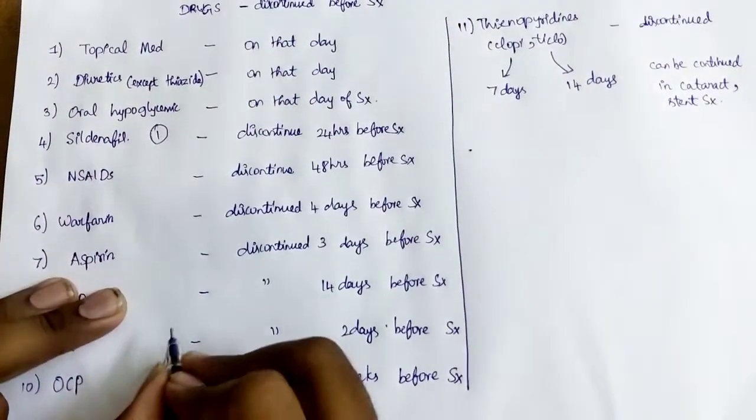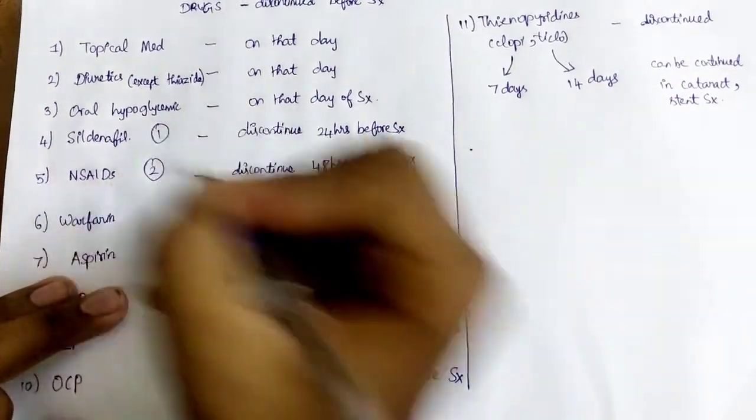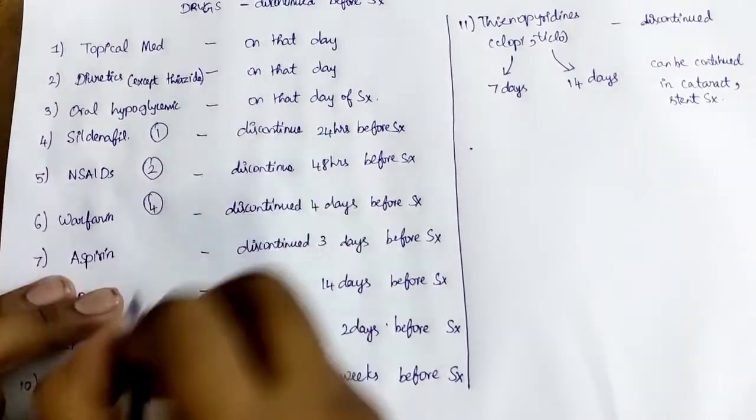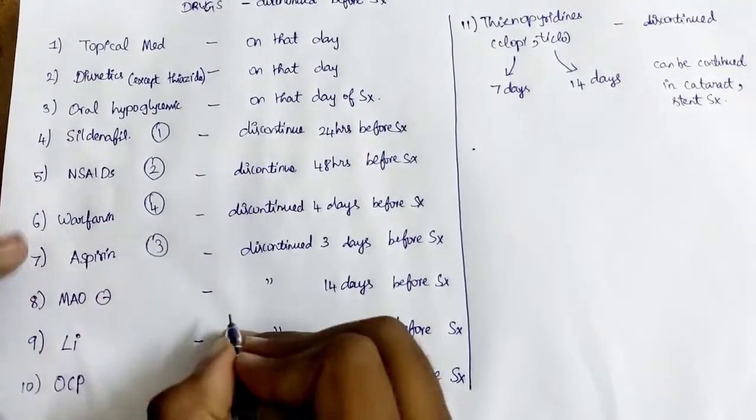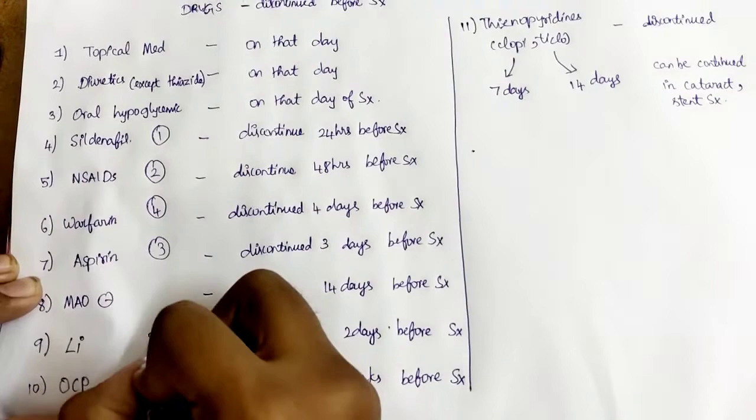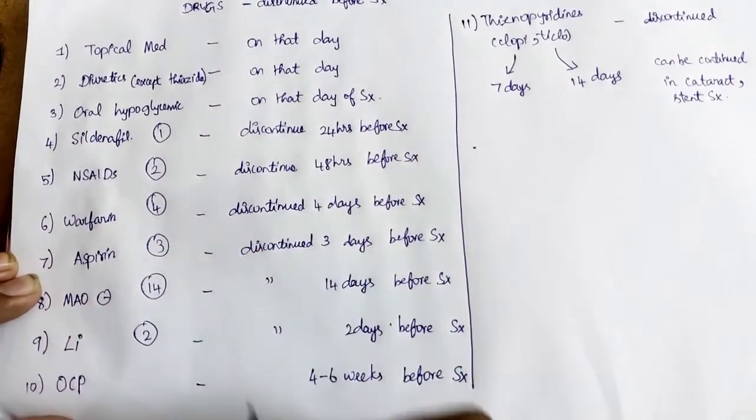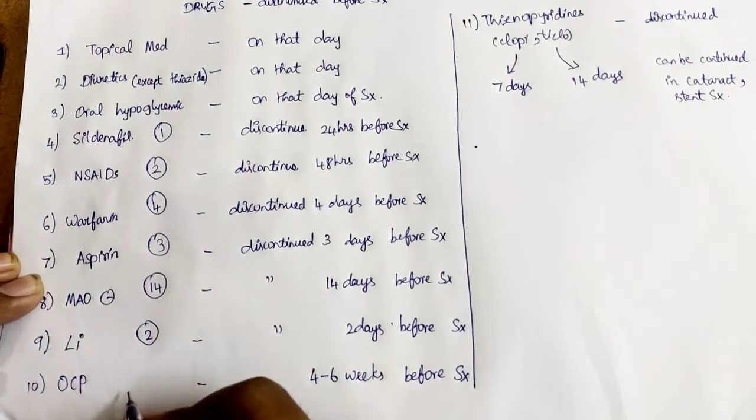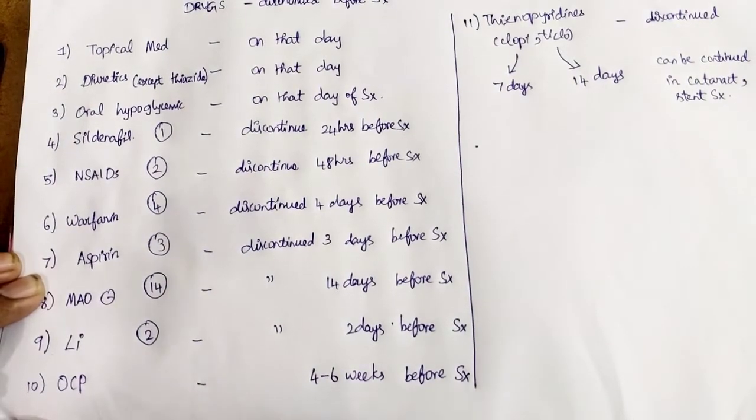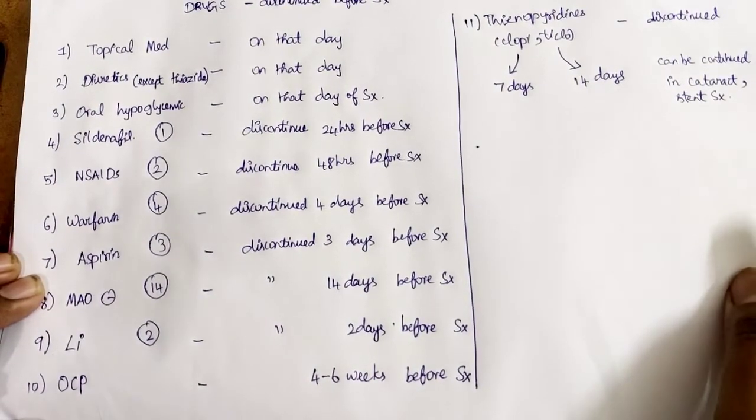Sildenafil, one day. NSAIDs, two days. Warfarin, four days. Aspirin, three days. Lithium, two days. MAO inhibitor, 14 days. This is four to six weeks. Yes, keep that in mind. Waiting period.